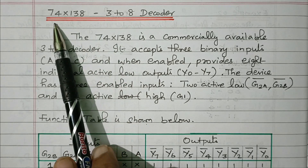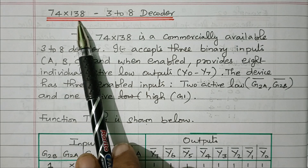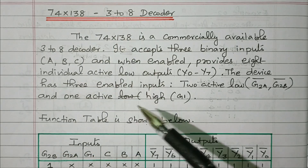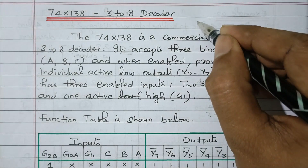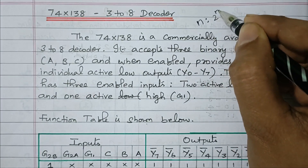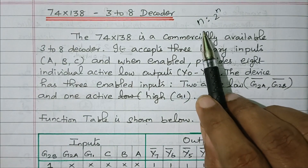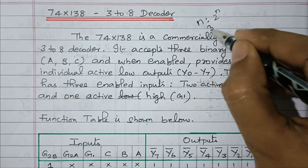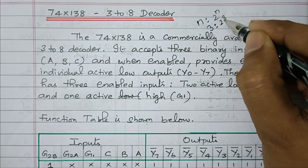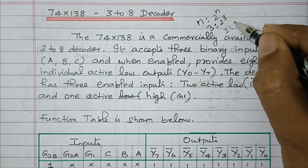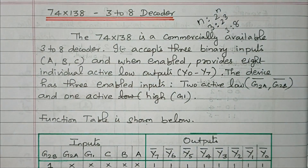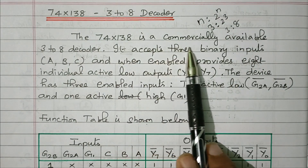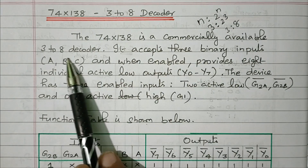Now we will go to the topic. The IC number is 74X138; it is a 3-to-8 decoder. A decoder is a device having n inputs and 2-to-the-power-n outputs. Here n is 3, so we have 3 inputs and 2-to-the-power-3, that is 8 outputs — 3 inputs with 8 outputs. So this 74X138 is a commercially available 3-to-8 decoder.